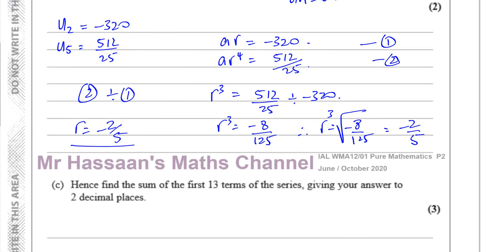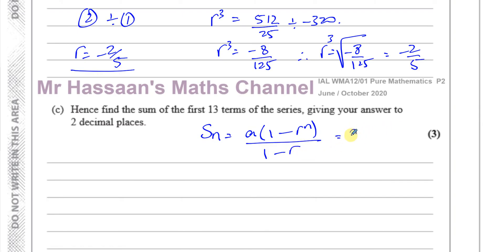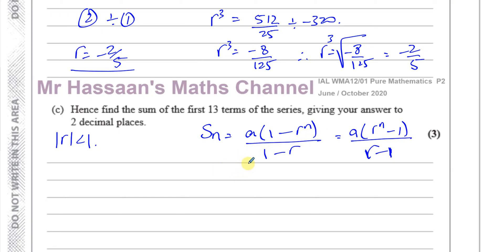For part C, we need to find the sum of the first 13 terms. We know Sₙ = A(1 − R^n)/(1 − R). There's also the form A(R^n − 1)/(R − 1), which gives the same answer, but we use the first form when the magnitude of R is less than 1, as it makes calculations easier.